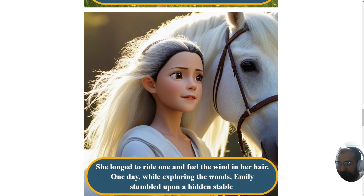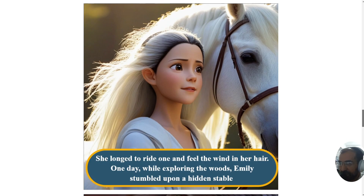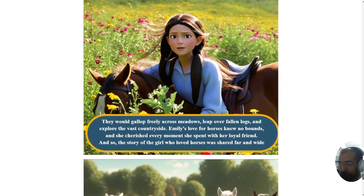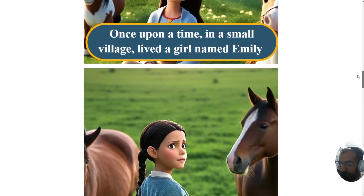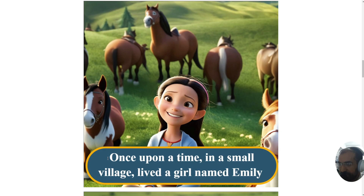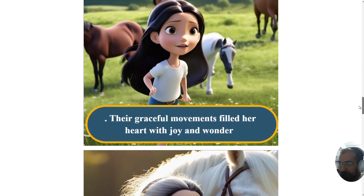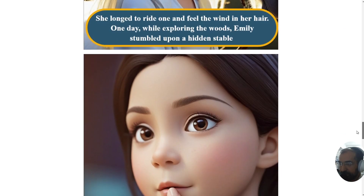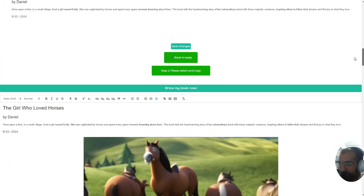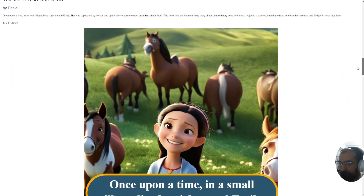Welcome back everyone to Generate.net. In this video we're going to be demonstrating the latest additional functionality to our children's book creator. This children's book creator is unlike anything you've ever seen before — we've basically made it bulletproof and foolproof. Anyone could use this. The additional functionality today is the text on top of the image, and this is completely customizable. When you see how quickly you can achieve something like this including an intro page, your jaw will drop.